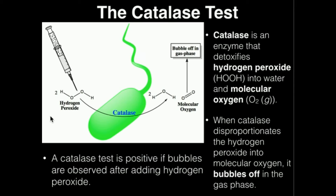My name is Kevin Tokoff. In this video, we're going to discuss the theory behind the catalase test. Catalase is an enzyme that detoxifies hydrogen peroxide into water and molecular oxygen. Hydrogen peroxide is actually a dangerous molecule in any organism because it's prone to forming radicals, which can actually damage DNA and proteins and lipids.